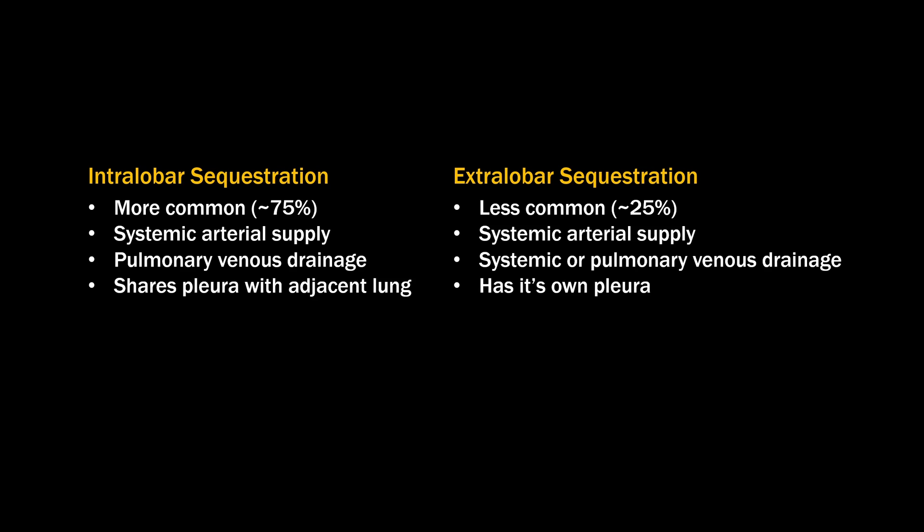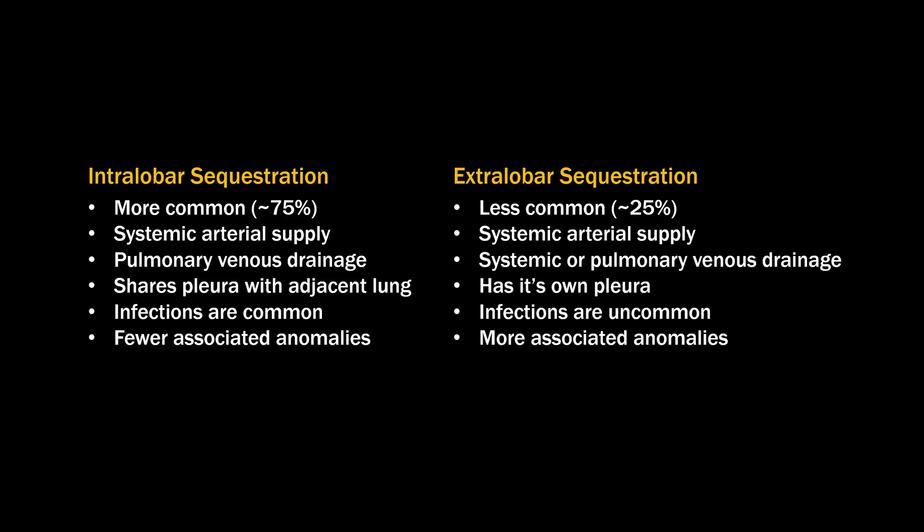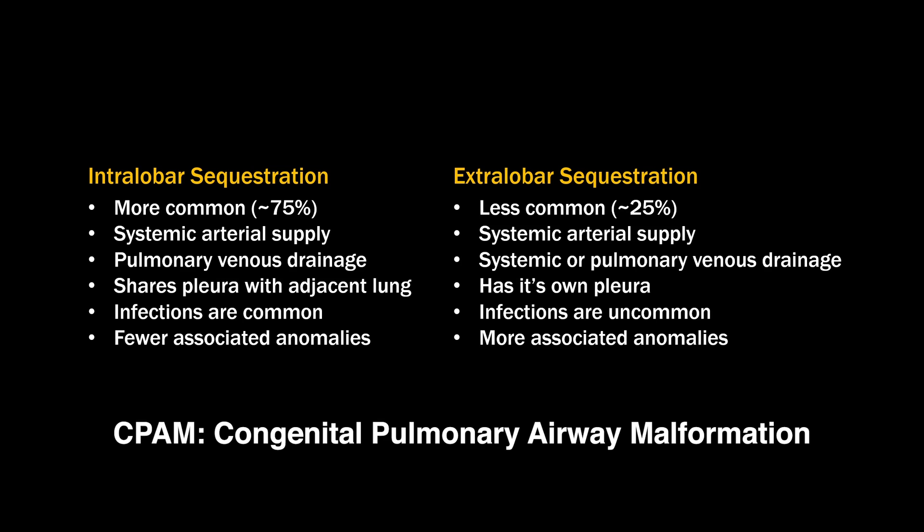Intralobar sequestration shares its pleura with the adjacent lung, and because of the pores of Cohn and anomalous bronchi that can connect with the rest of the lung, these are more likely to present with infection compared to extralobar sequestrations. Extralobar sequestrations have their own pleura, so infections are less common. Extralobar have more associated anomalies, which can include congenital diaphragmatic hernia, congenital heart disease, vertebral anomalies, and colonic duplication. Both types are frequently associated with CPAMs — these are called hybrid lesions — so it's not uncommon to see a sequestration with internal cystic areas.